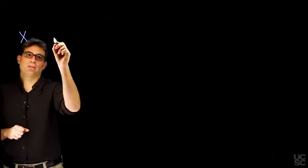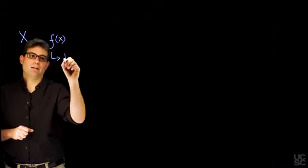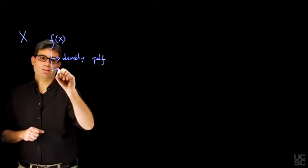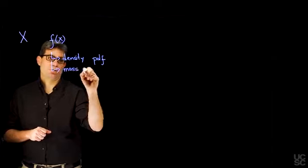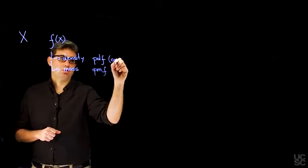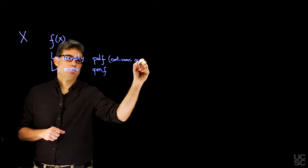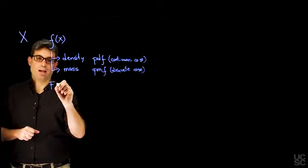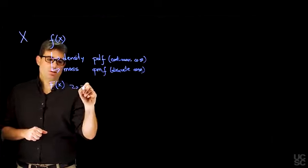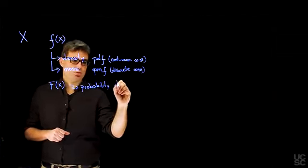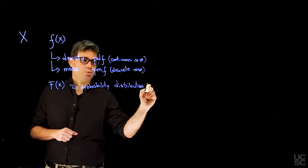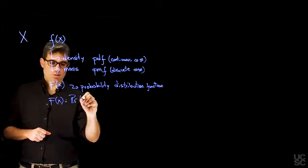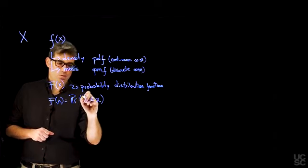More formally, if we have a random variable x with density f(x), this can be the probability density function in the continuous case, or the probability mass function (PMF) in the discrete case. We also have capital F(x), the cumulative distribution function, which gives the probability that your random variable is less than or equal to a given number.